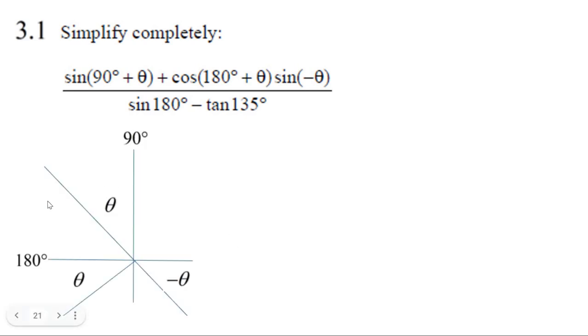So for 90 plus theta, that's right here. So this is going to be positive, but it's a co-function, so it switches to cosine theta.